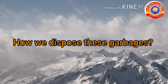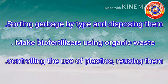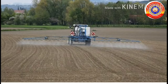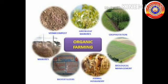How do we dispose of garbage? First, by sorting garbage by type and disposing properly. Second, make bio-fertilizers using organic waste. Third, control the use of plastics and reuse them. Chemical pesticides and fertilizers destroy not only harmful insects but also harmless microorganisms. Chemical fertilizers increase the amount of certain components in the soil, and chemicals cause the destruction of earthworms and other microorganisms found in the soil.